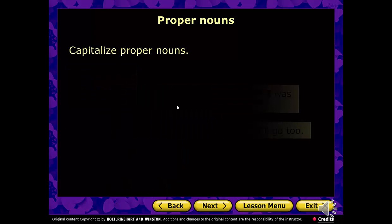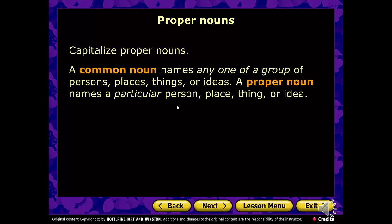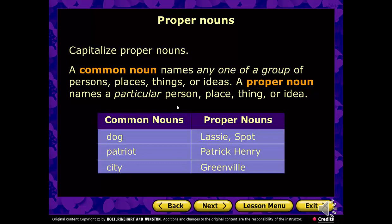Proper nouns. Common nouns refer to any one of a group of persons, places, things, or ideas. Proper nouns name a particular person, place, thing, or idea. For example, a common noun is 'dog' — any dog — but a proper noun specifies which dog: Lassie, Spot, or Cassie — capital C. A patriot becomes Patrick Henry. A city becomes Greenville.